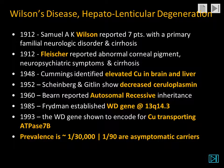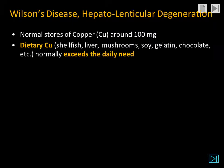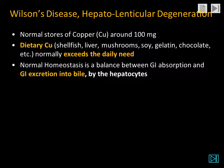The prevalence of this autosomal recessive disorder is approximately one in 30,000, but about one in 90 people are asymptomatic carriers of the heterozygous state. Wilson's disease is related to abnormal copper metabolism. Normal stores of copper are around 100 milligrams throughout the body. Dietary copper comes primarily from shellfish, liver, mushroom, soy, gelatin, and chocolate, and normally exceeds the daily requirements.